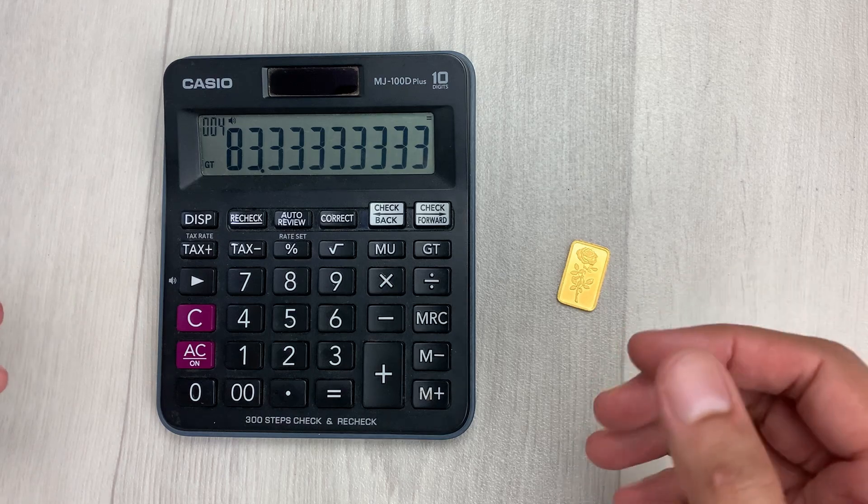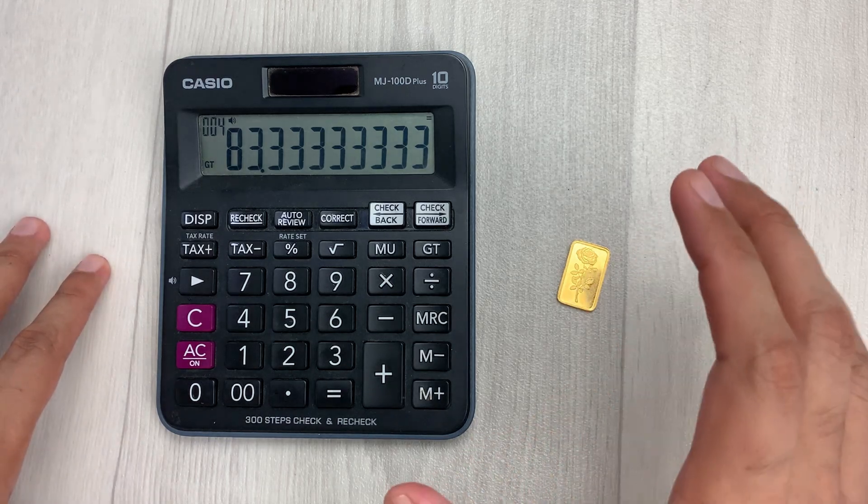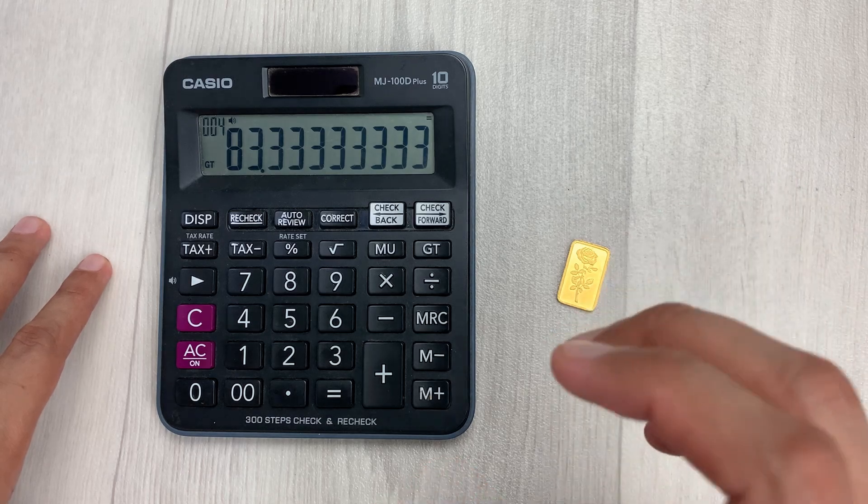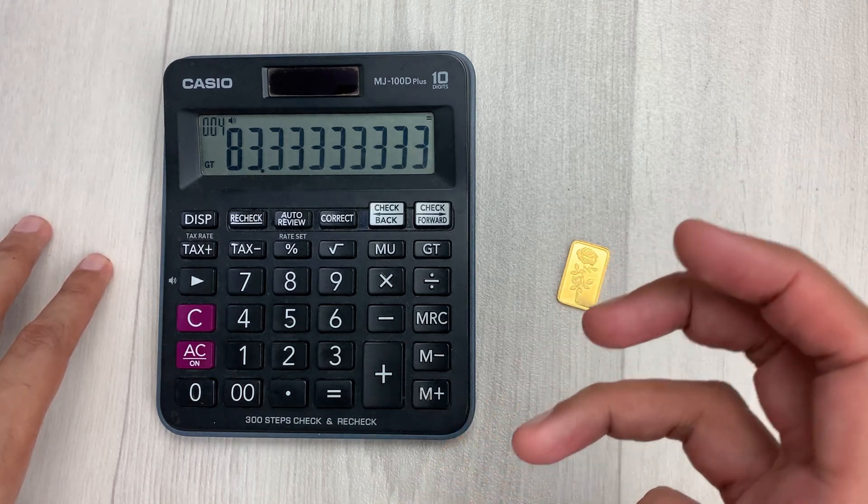We always have to divide by 24 because 24 carat gold is pure gold.